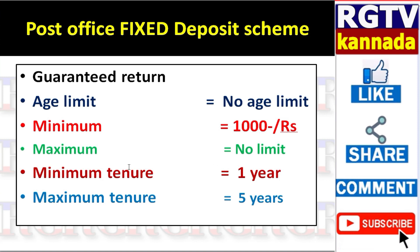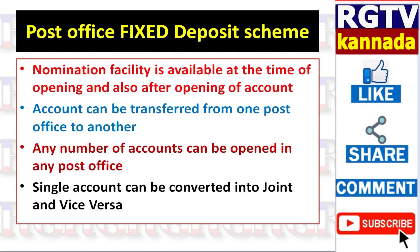The minimum maturity period gives a 5.5% interest rate. If you have a nominee facility, you can use a post office to open the account.